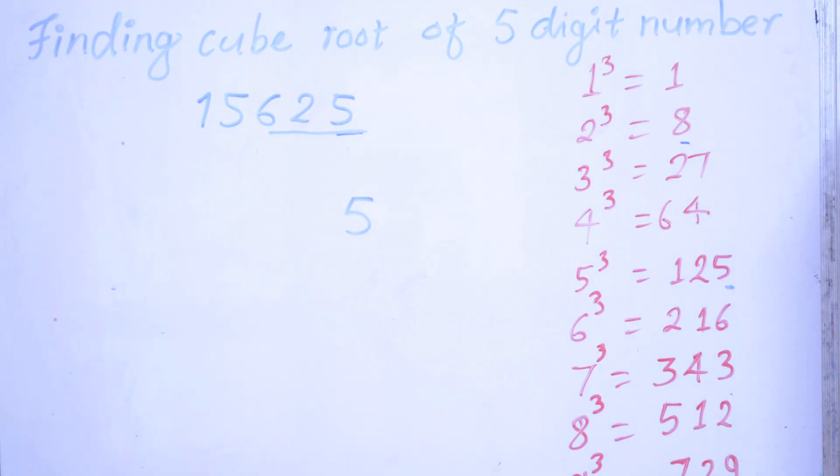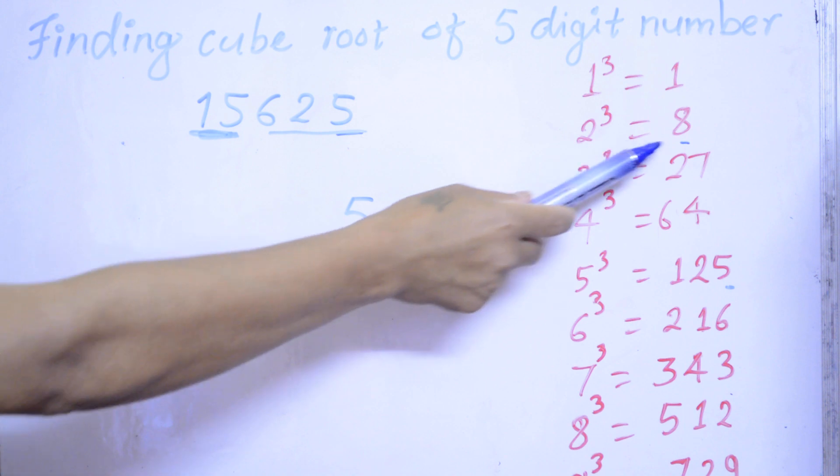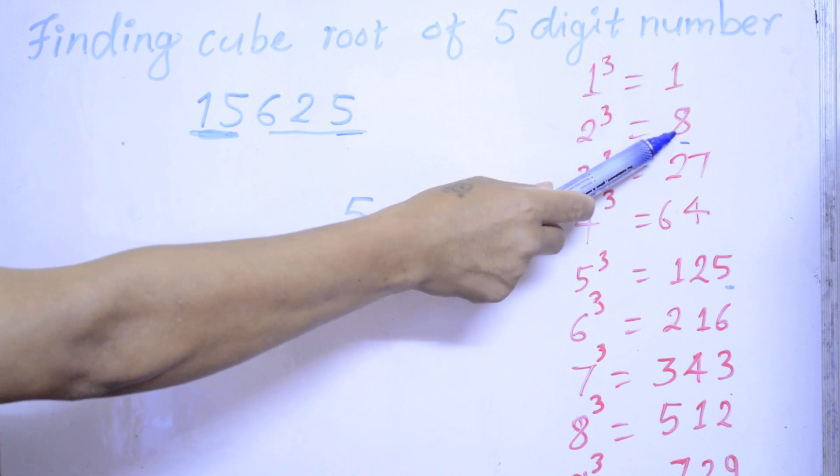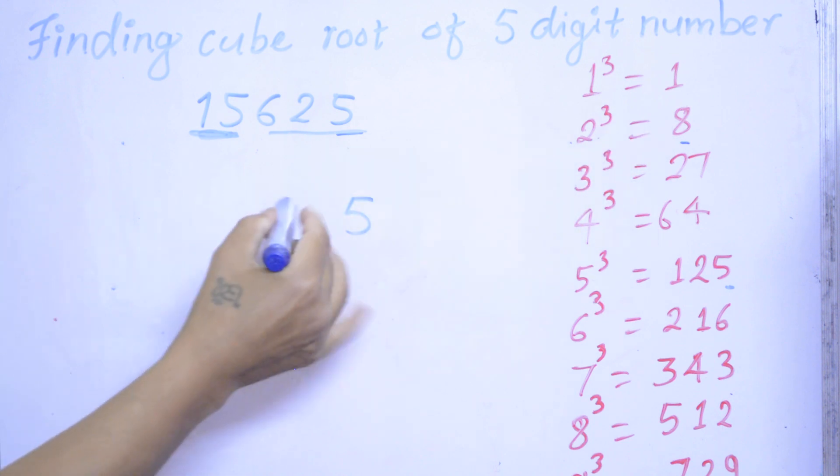Now again, you leave this 3-number 625. Now, what is the 15? What is the nearest cube number of 15? 1827. The nearest is 8. So what is the cube roots of 8? 2. So we write here 2. Now, 25 is the cube roots of 15,625.